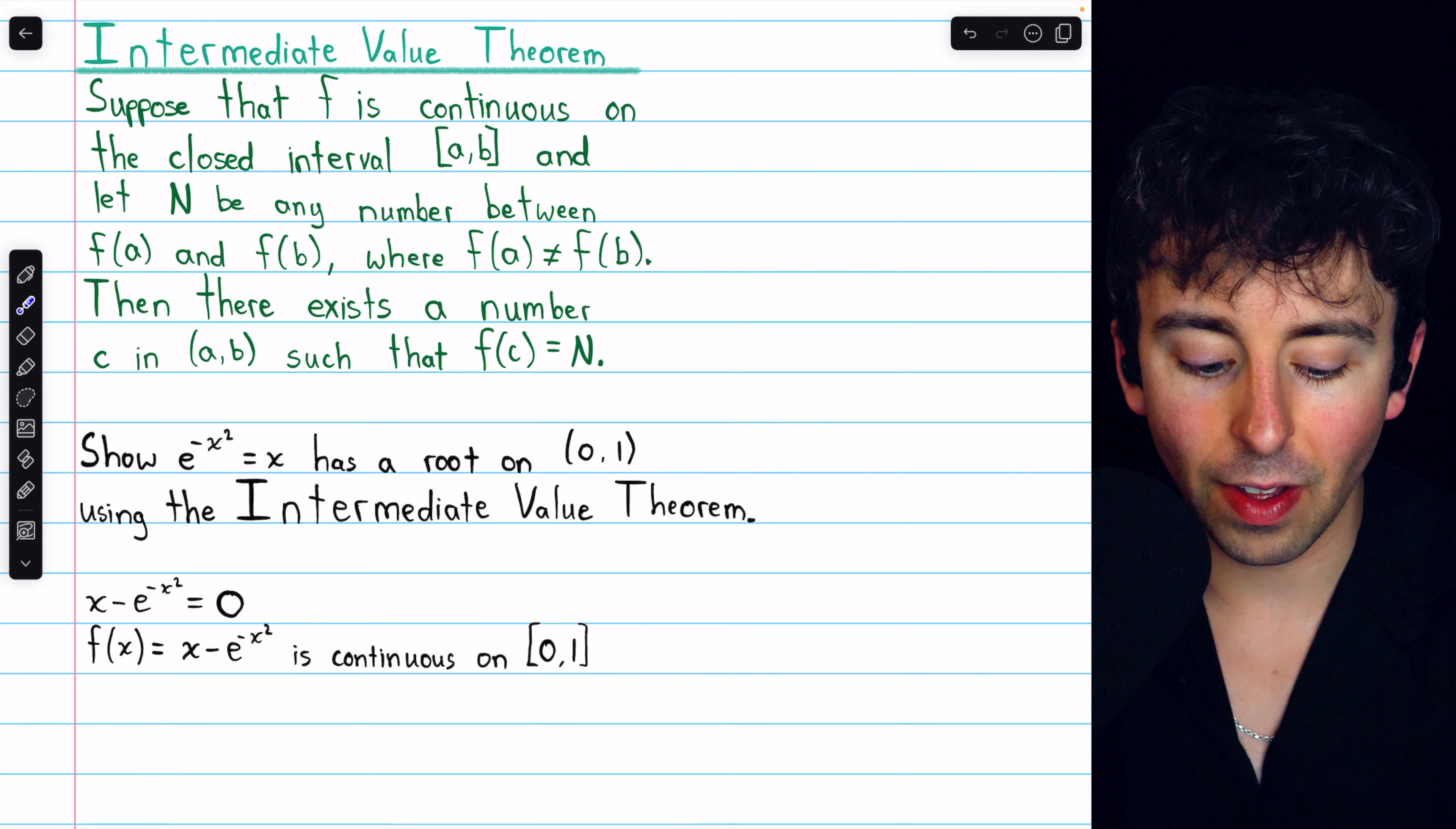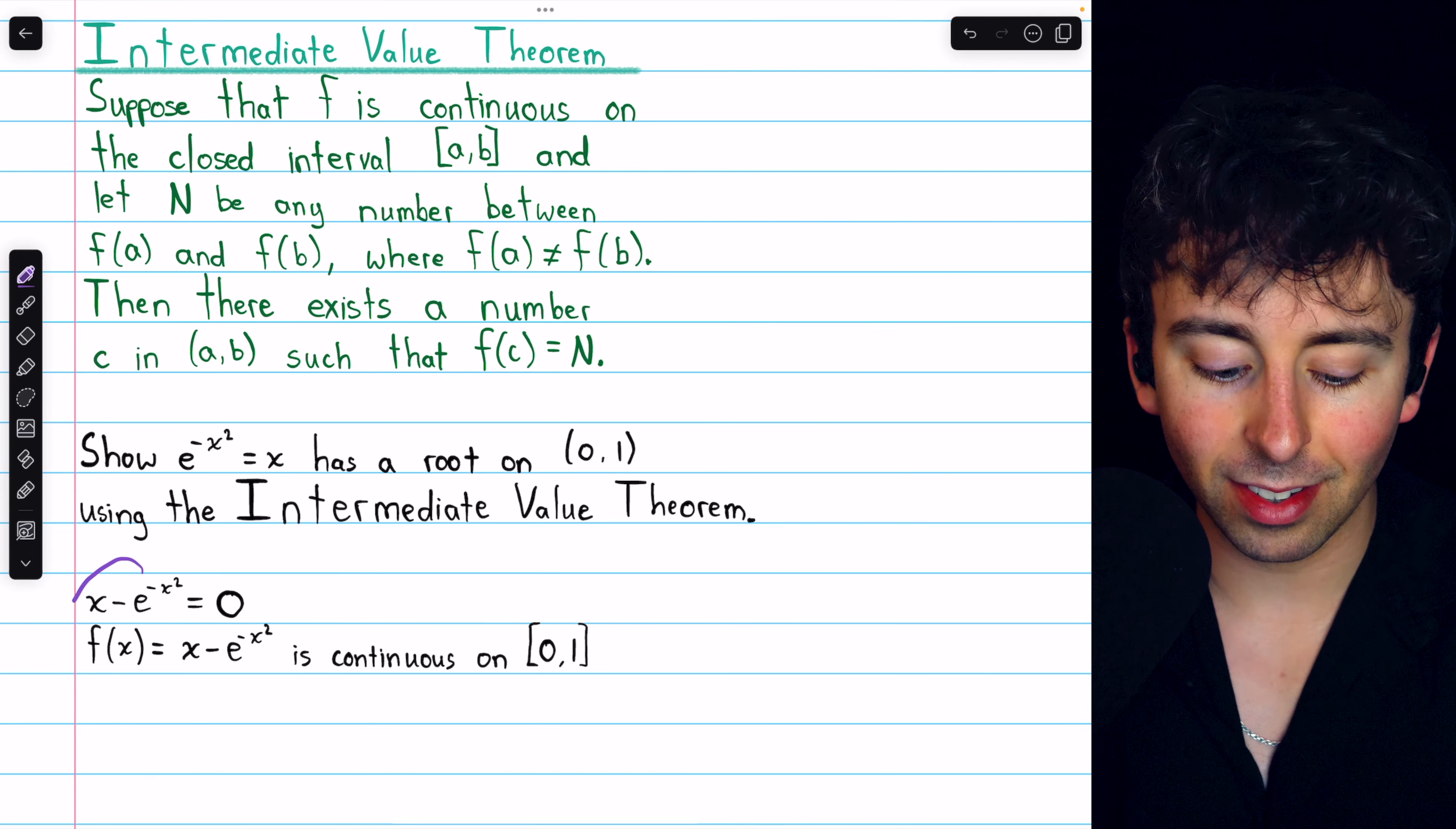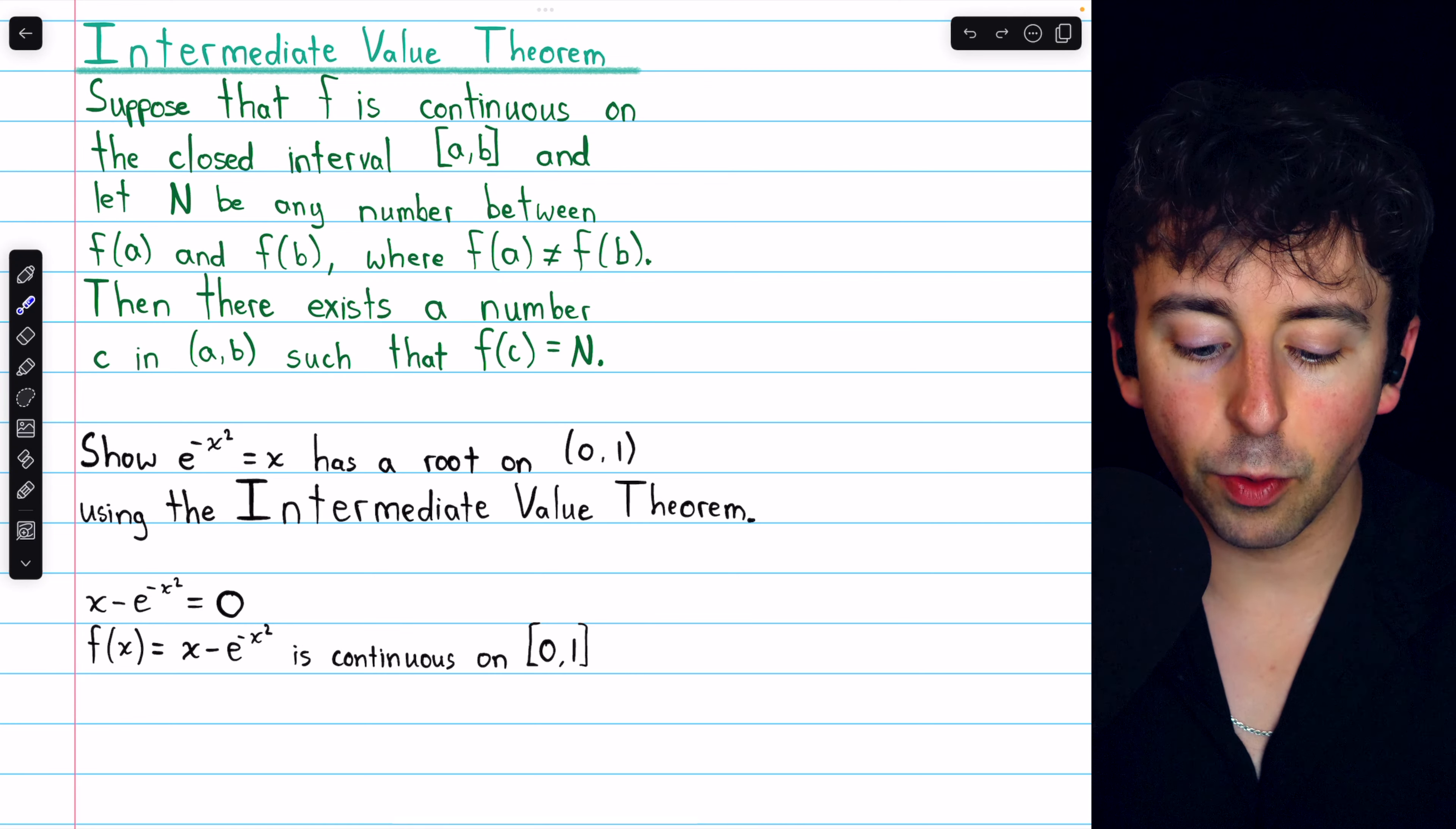Thus, we have x minus e to the negative x squared equals 0. Now this thing on the left we can treat as our function. We'll say f of x equals x minus e to the negative x squared.